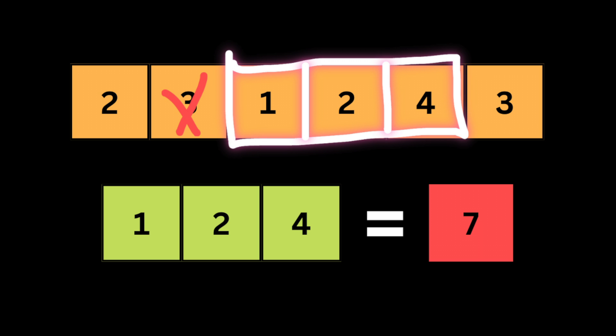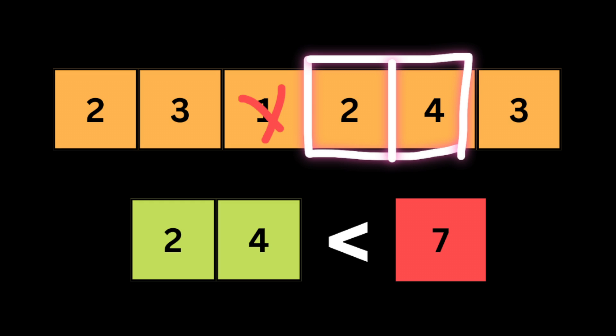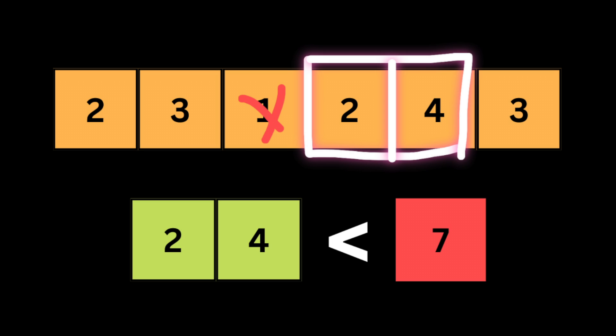After eliminating the first number inside the window, the total is seven, which equals the target. So we store the length of that subarray because its sum equals the target, and we continue by making the window smaller again to check if we can find an even shorter subarray that equals the target. The new total is six, which is smaller than the target, so we make the window larger by adding the next number, giving a total of nine.